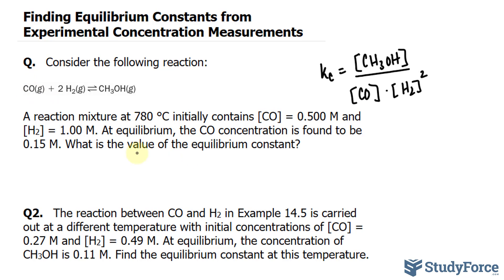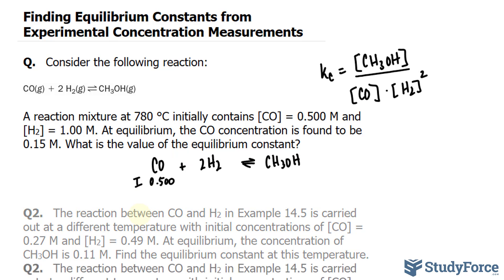We're told that CO, if I rewrite this, CO plus 2H2 yields CH3OH. The initial CO is 0.500, and at equilibrium, the CO concentration happens to be 0.15 molar. So I'll write down, at equilibrium, we have 0.15 molar.